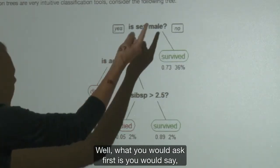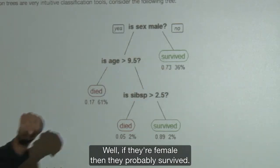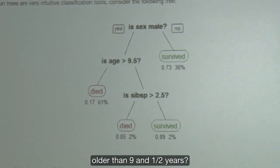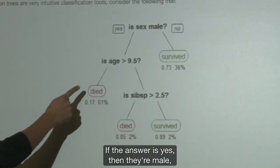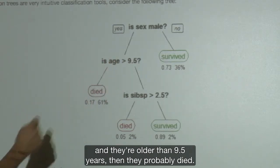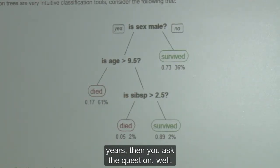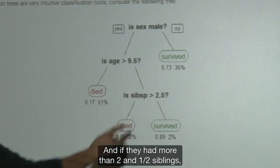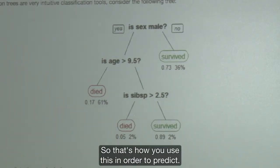So let's say you're given a new person, and you want to predict whether or not this person would have died. What you would ask first is, are they male or female? If they're female, then they probably survived. If they're male, you go down the tree. Then the next question is, is the person older than nine and a half years? If the answer is yes, then they're male and they're older than 9.5 years, and they probably died. If they're young, meaning under nine and a half years, then you ask the question, how many siblings do they have? If they had more than two and a half siblings, they probably died.